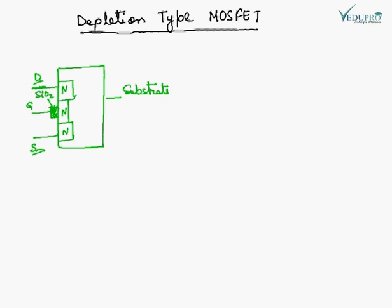So gate is insulated. Because the gate is insulated and input we are applying to the gate, the input impedance increases. So the input impedance of MOSFET is higher than FET.